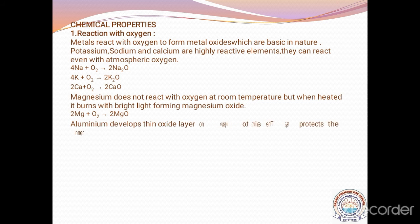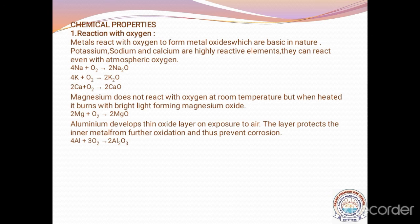Coming to aluminum — whenever aluminum is exposed to air, it develops an oxide layer. This oxide layer protects the inner metal from further oxidation and prevents corrosion. The equation shows aluminum reacting with oxygen to form aluminum oxide (Al₂O₃). This protective coating of aluminum oxide shields the metal inside.